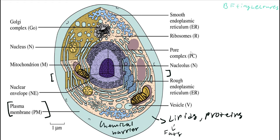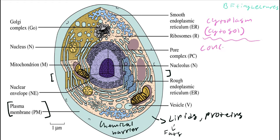Now we're going to go into the parts of the cell. Within the plasma membrane, you will find something called the cytoplasm, also known as cytosol. If you see that on an exam, just think of cytoplasm. Cytoplasm is a thick, aqueous environment — it's like jelly within the plasma membrane. That's the blue region shown here. It has concentrated protein, about 20 to 30% of the cytoplasm is protein.